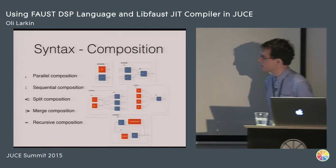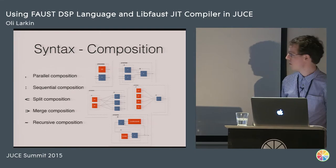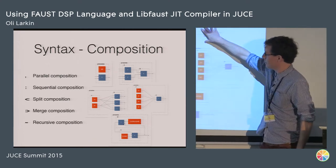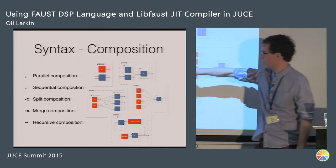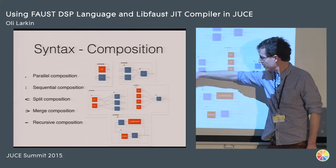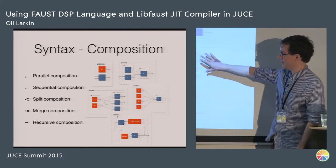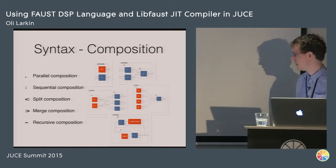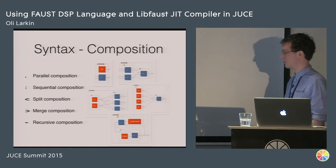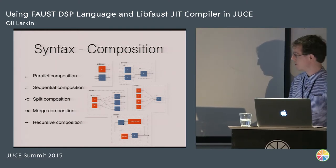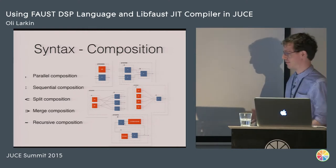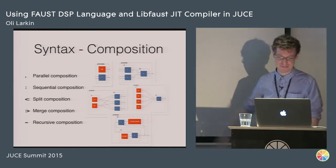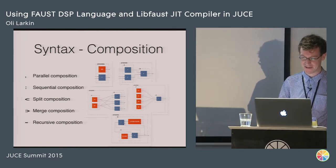The composition operators: you've got that comma for parallel composition. You've also got sequential composition, which is A going into B. A split composition goes from a small number of signals to more, and merge is the opposite. Recursive is one that gets used all the time in audio DSP — if you're doing IIR filters or an accumulator, you want to use that one. Of all the ways of composing expressions in Faust, this is the one that's very easy to get wrong and tear your hair out trying to fix bugs with.